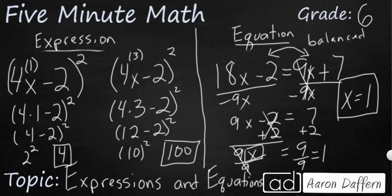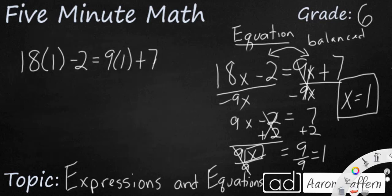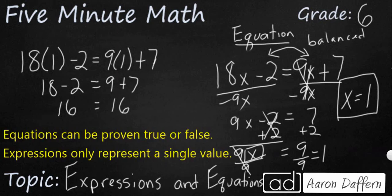Let's see what happens when we plug that back into the equation. So you see here, I've rewritten our equation, and I've just put the 1 in here for the x. And so 18 times 1, that's just going to be 18 minus 2. 9 times 1 is going to be 9, plus 7. So 18 minus 2 is 16. 9 plus 7 is 16. So in this case, x equals 1 makes our equation true.